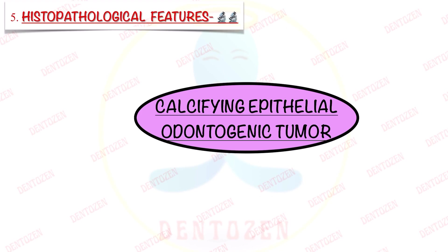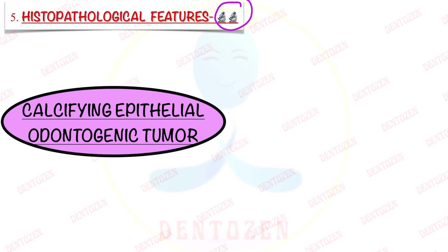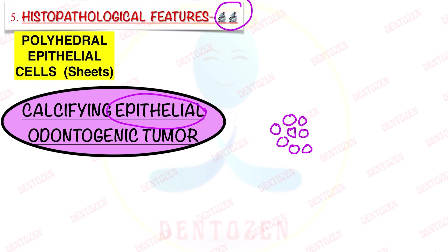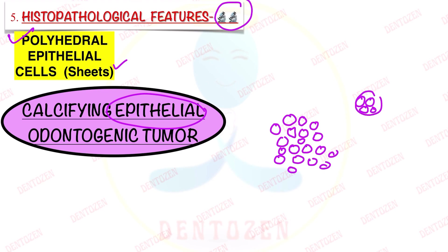Now we come to the histopathology of this tumor — how it appears under the microscope. As it is an epithelial tumor, epithelial cells are the main component. The shape of these epithelial cells is polyhedral — a very important point. These epithelial cells lie in large, closely packed sheets or in islands. The connective tissue in between is bland fibrous connective tissue and is scanty.